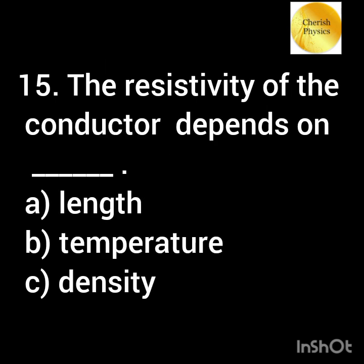The resistivity of the conductor increases with increase in dash. Option A: length. Option B: temperature. Option C: density.